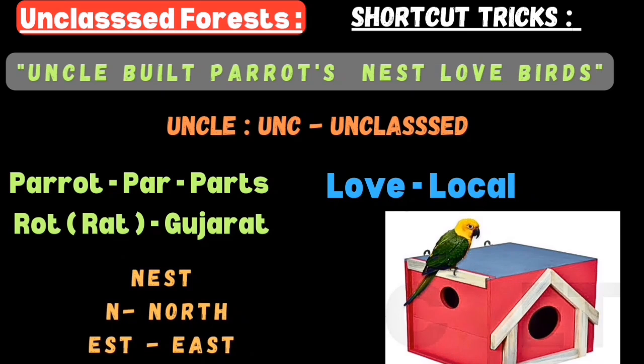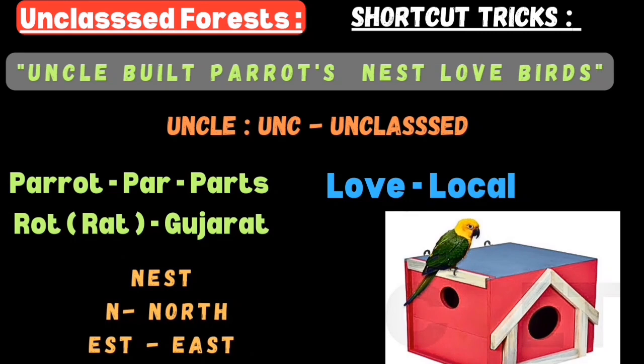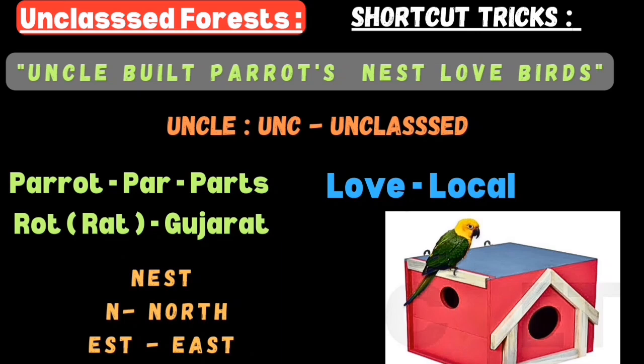Unclassed forest states - the shortcut is 'Uncle build Parrot's nest for lovebirds.' 'UNC' refers to Unclassed forest. 'PAR' from Parrot refers to parts, and 'ROT' sounds like 'RAT' representing Gujarat. 'N' from Nest represents North, 'EST' represents East - meaning all northeastern states. So all northeastern states and parts of Gujarat come under unclassed forest. From 'lovebirds,' 'LO' stands for Local - unclassed forests are managed by local communities.